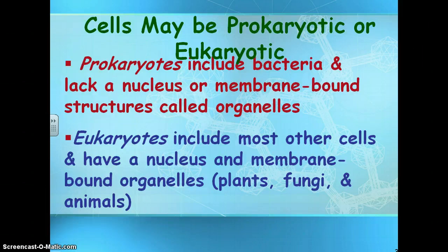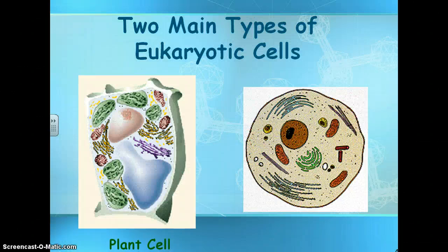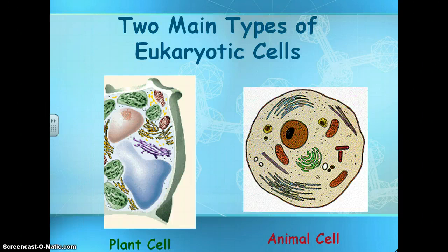Remember, prokaryotes include bacteria. They don't have a nucleus, and they don't have any membrane-bound organelles. Eukaryotes have a nucleus, and they do have membrane-bound organelles. The two main types of eukaryotic cells are plant and animal cells.